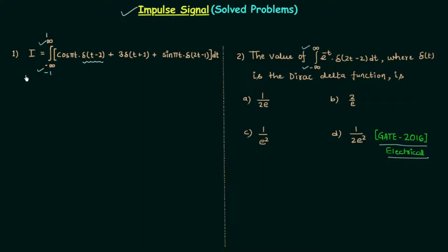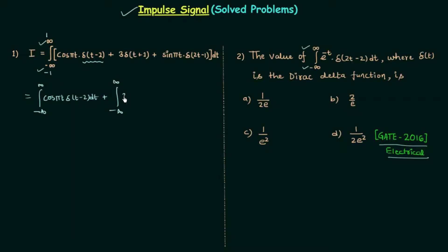The first problem has cos(πt) multiplied by δ(t-2), then a weighted impulse 3δ(t+1), and the third term is sin(πt)·δ(2t-1). Opening the bracket, we get three separate integrals from minus infinity to infinity: the first is cos(πt)·δ(t-2) dt, the second is 3δ(t+1) dt, and the third is sin(πt)·δ(2t-1) dt.